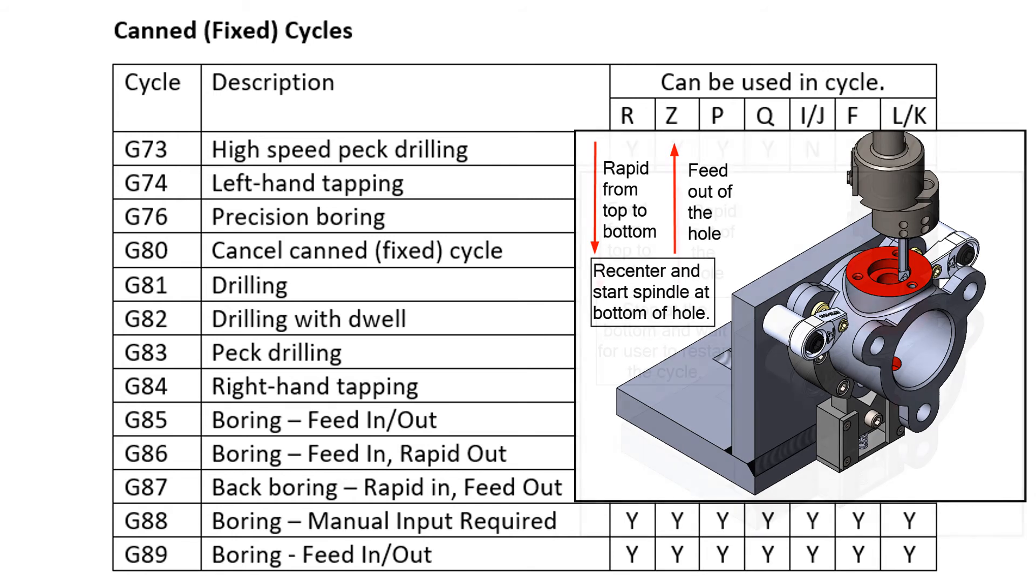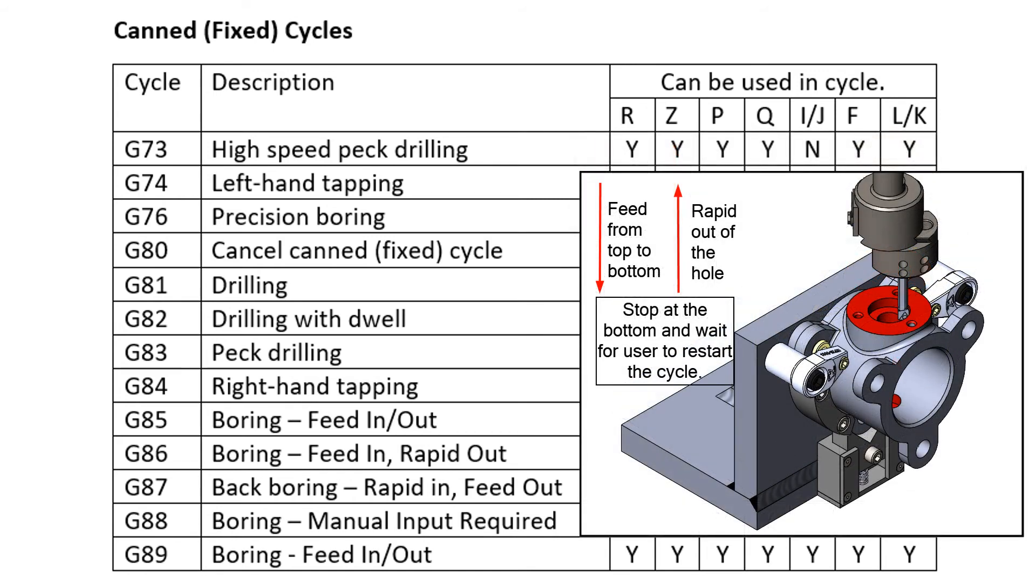The G88 cycle will feed the tool to the bottom of the hole, dwell if required, then stop the spindle and wait for the user, who typically will put the machine into manual mode and perform some required function such as cleaning the chips out of the bore.